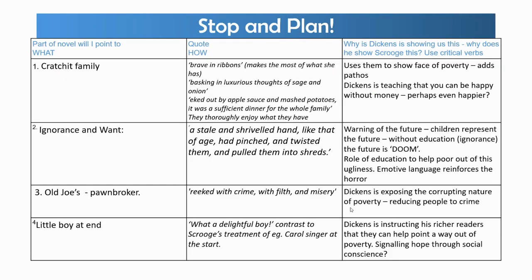Here is my plan. I would start off by looking at the Cratchit family — I know a few different quotes for them, so I've got some choices of detail to bring in. I'm trying to think why Dickens is showing us that family. Well, it's all very well to talk about the poor as a sort of mass of people, as Scrooge thinks of them in the first stave, but to get to know a family like this allows Dickens to put a face to poverty, which really adds pathos and empathy. I think Dickens is trying to teach everyone a universal truth: that you can be happy — perhaps even happier — without money if you've got family love. Then I might look at Ignorance and Want, how horrifically they're described, pointing out that children represent the future — Dickens is giving a warning that if we don't do something about poverty, it's going to be bleak for the future.